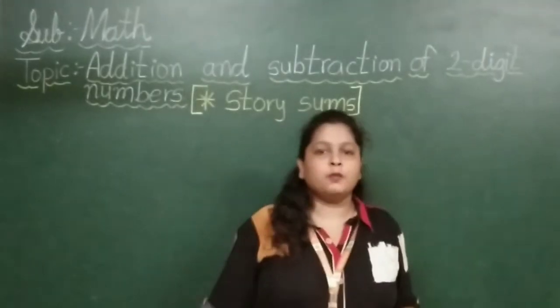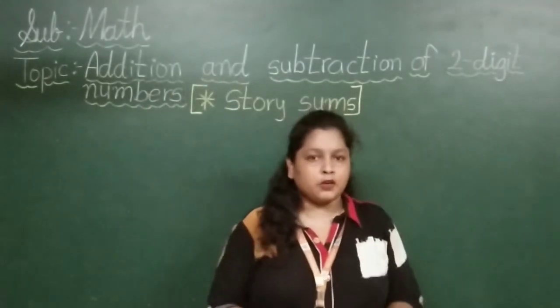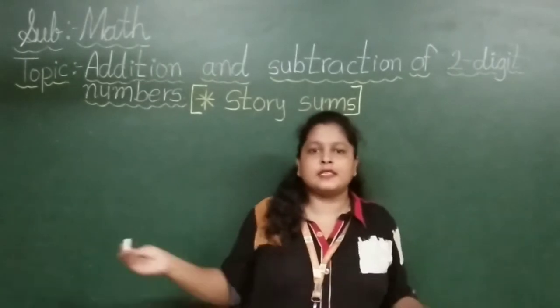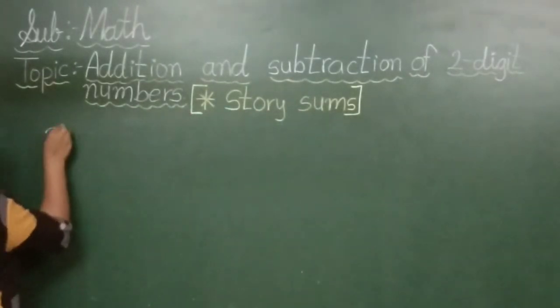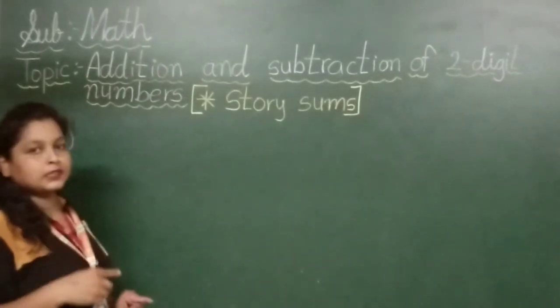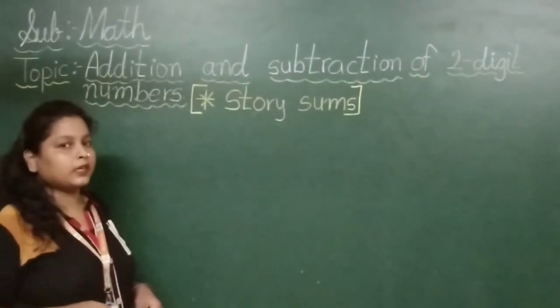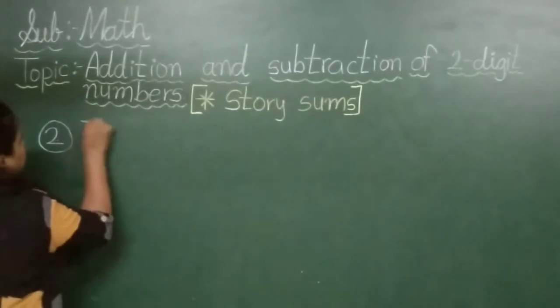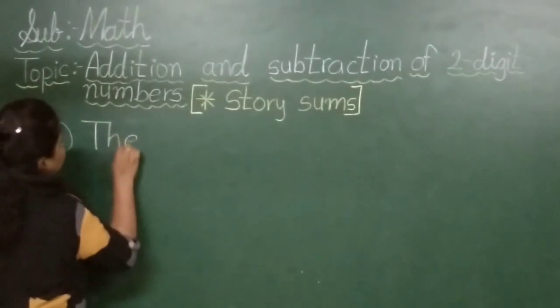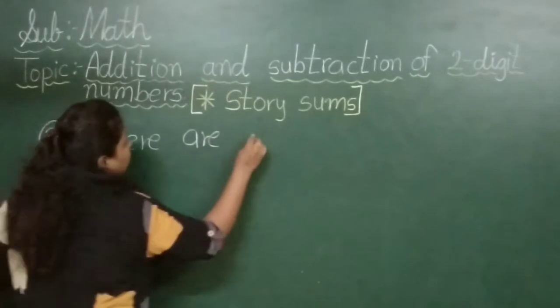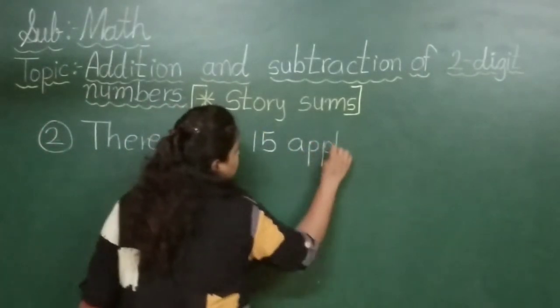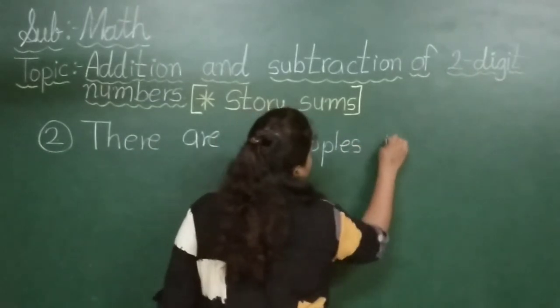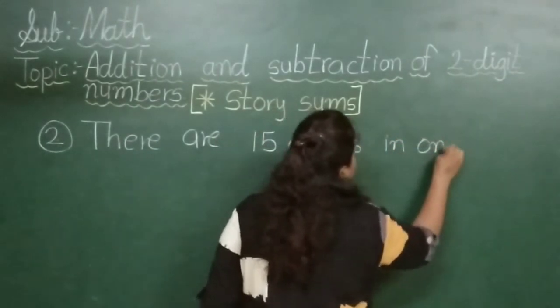There are 59 children in class 2F. Here we completed the first example of story sums. So let's see another one. Next, number 2.